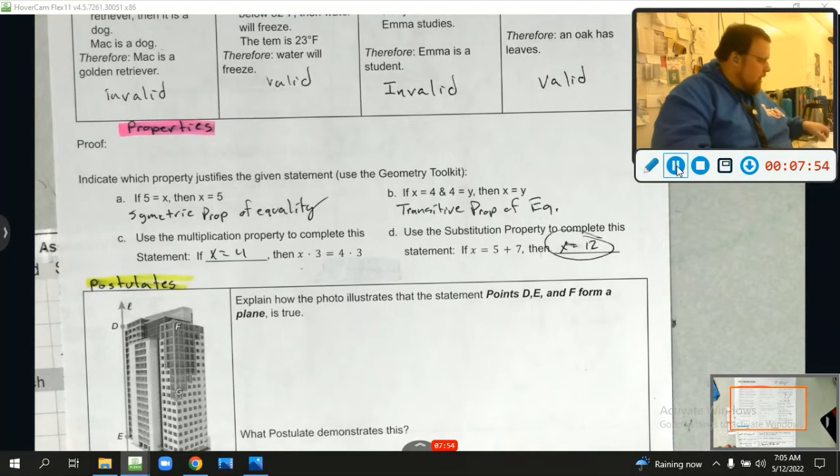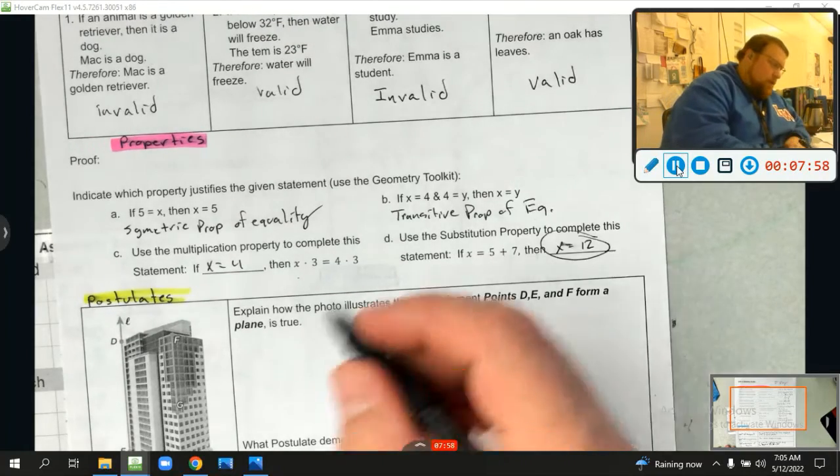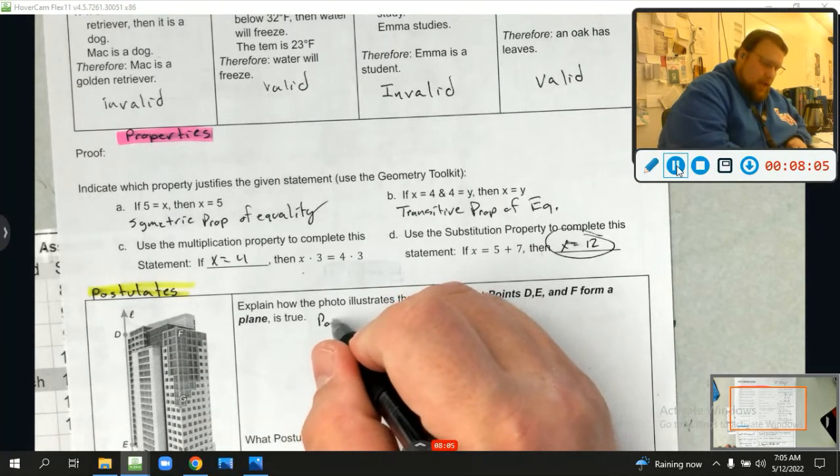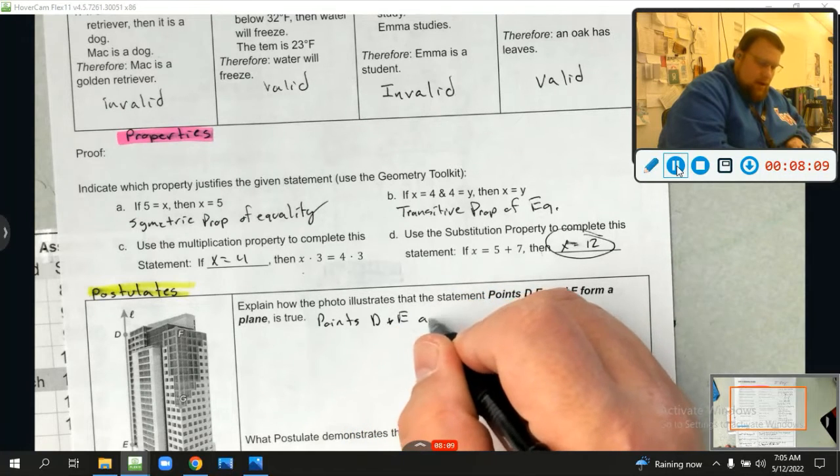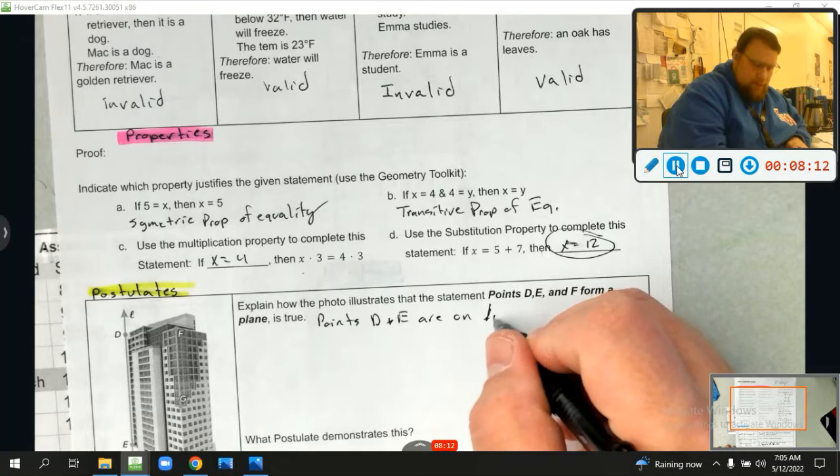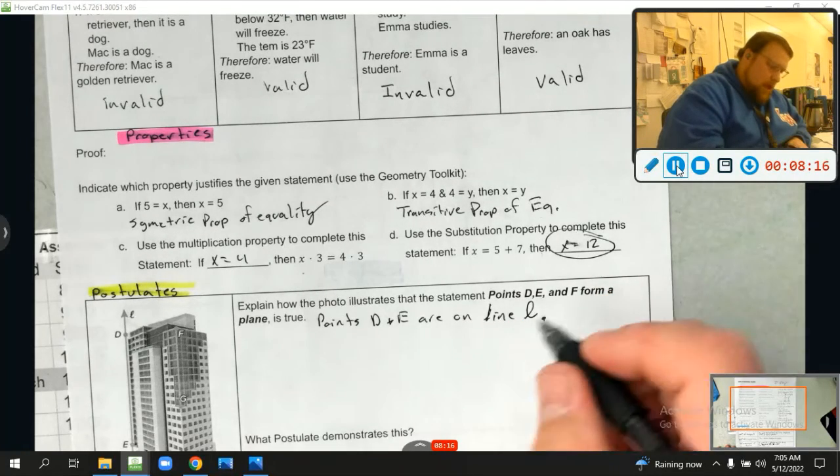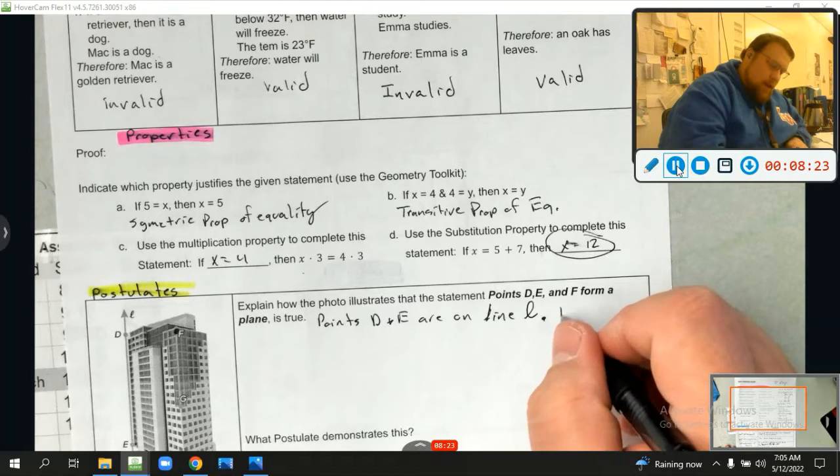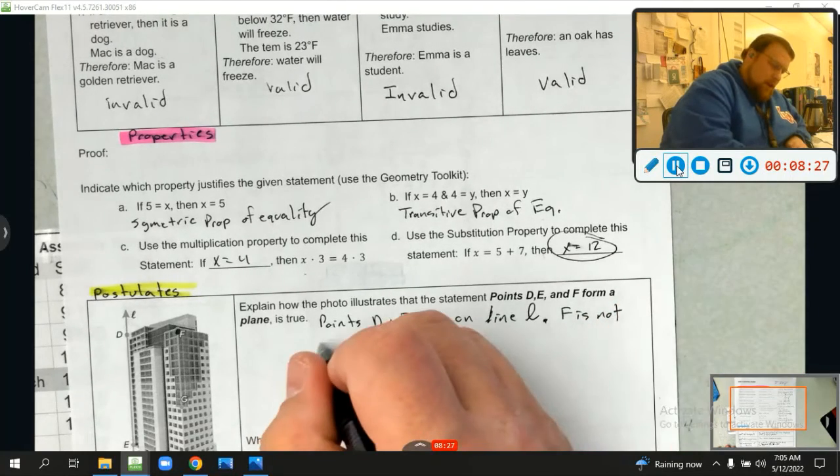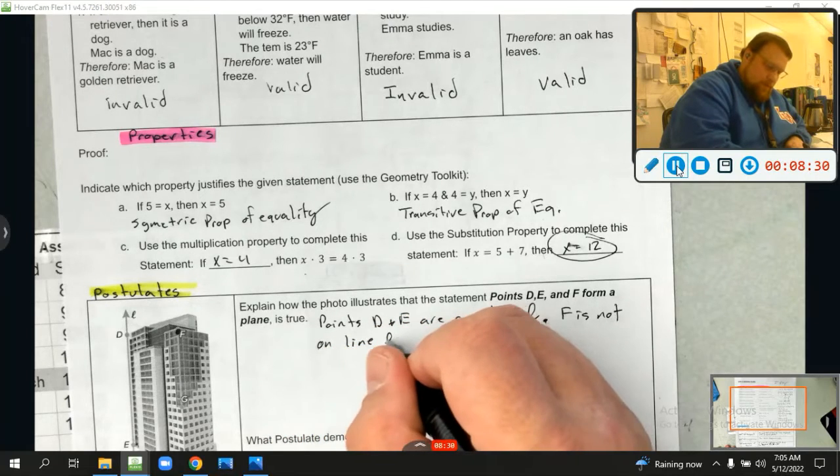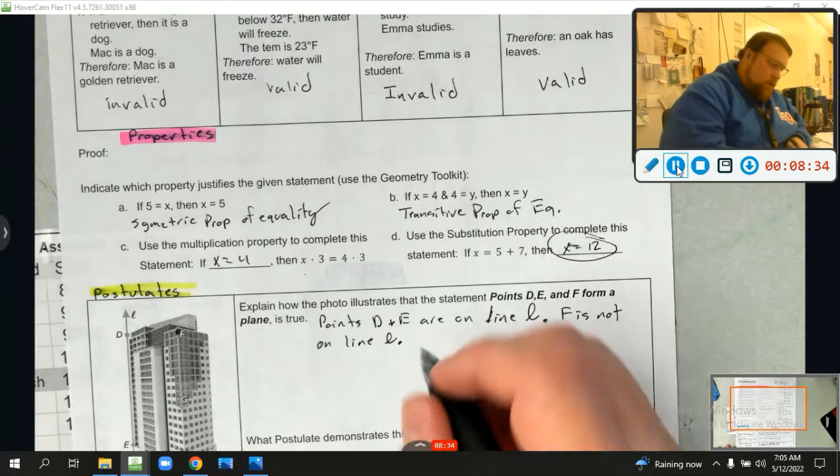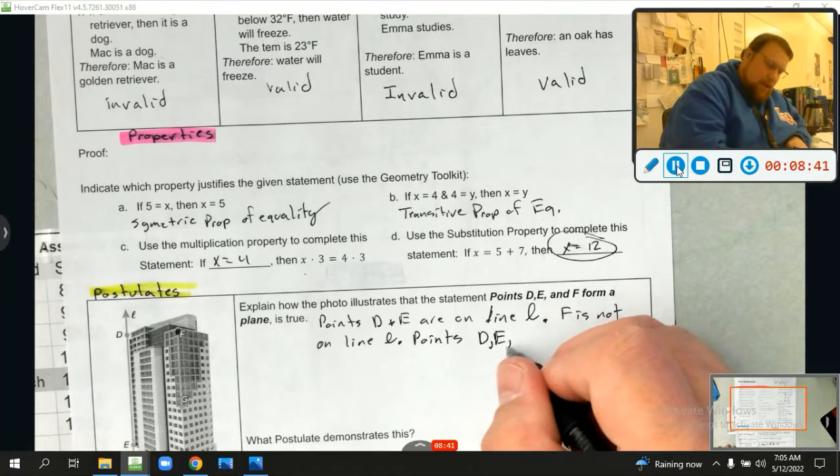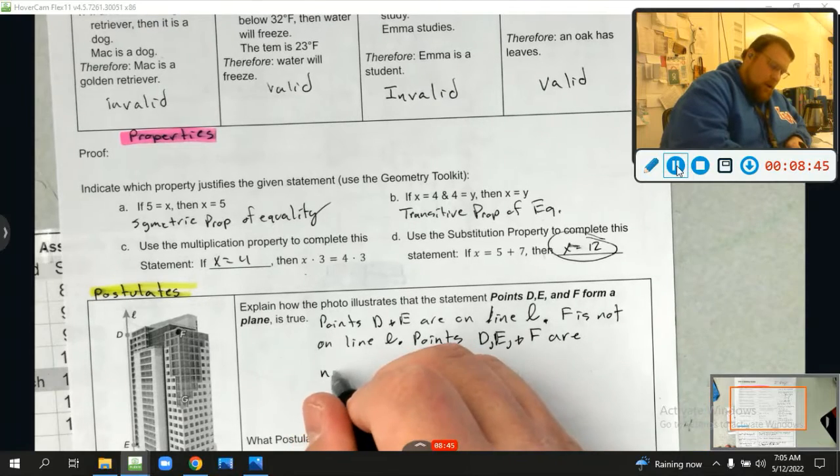So, first things first, we got to notice some things. We're going to explain it out. Notice that we have this line L that contains points D and E. So, we're going to say points D and E are on line L. But what do we also notice? Look at point F. F is not on line L.